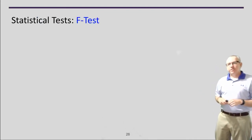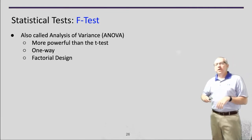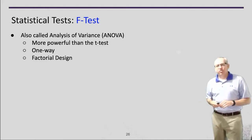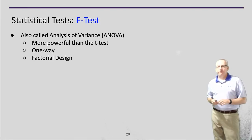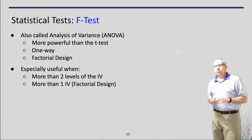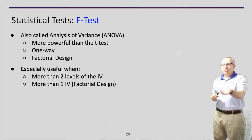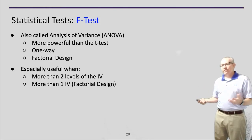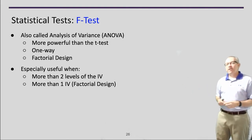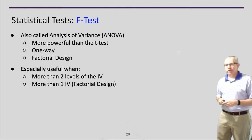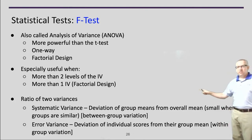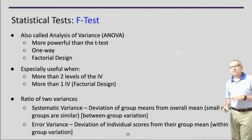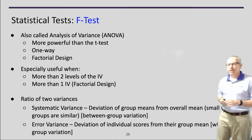A slightly more advanced version is the F-test, sometimes called ANOVA — a generalization of the t-test that can handle more factors and variables. There's the one-way ANOVA, and factorial designs with multiple independent variables. If I only have two levels of my independent variable I can do a t-test, but if I have three groups or multiple independent variables, I need an F-test. It's still a ratio of two variances: systematic variance — the between-group difference — over error variance, the within-group difference.